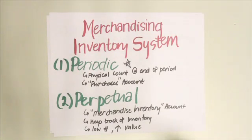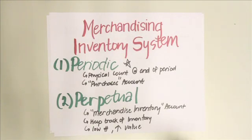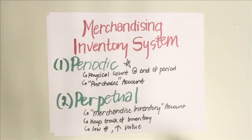The perpetual system requires the maintenance of records called stock cards, which offer a running summary of inventory inflow and outflow. It calls for the update of the merchandise inventory account whenever there is a purchase or a sale — in short, you keep track of the movement in the inventory account. This system is optimal for businesses that sell low numbers but high-value goods.